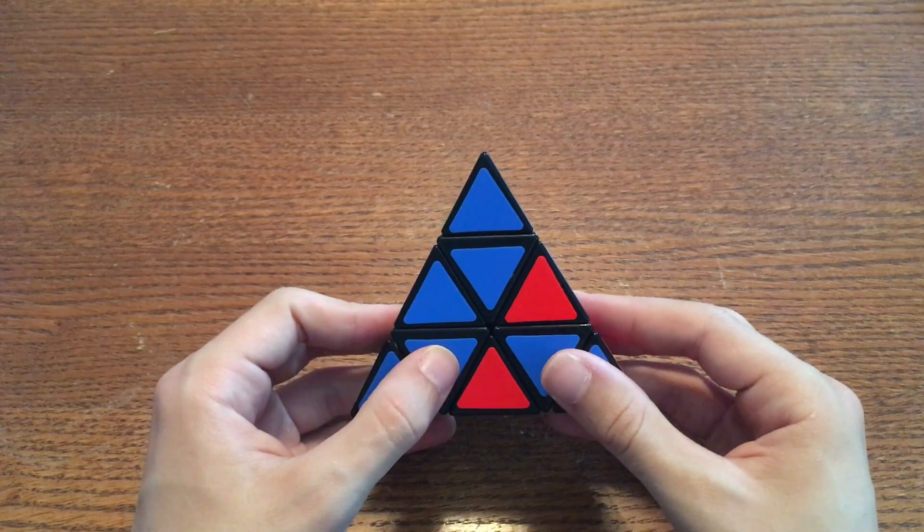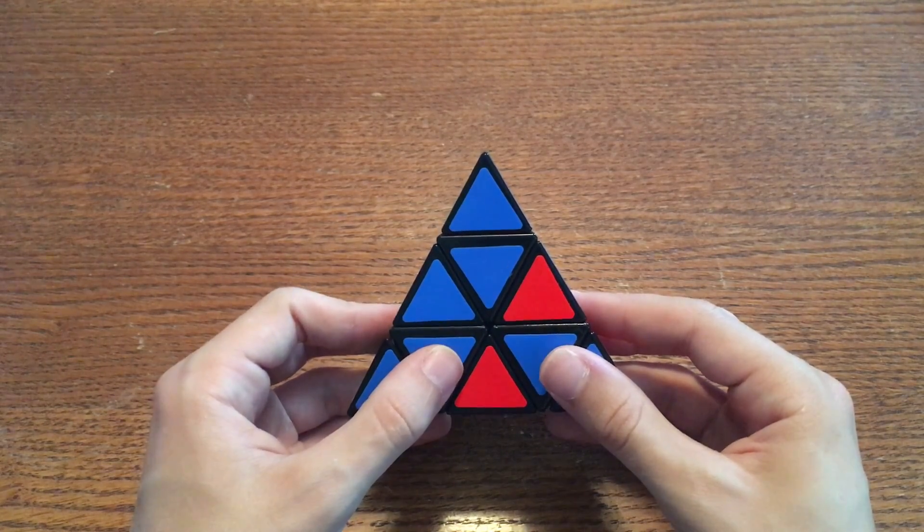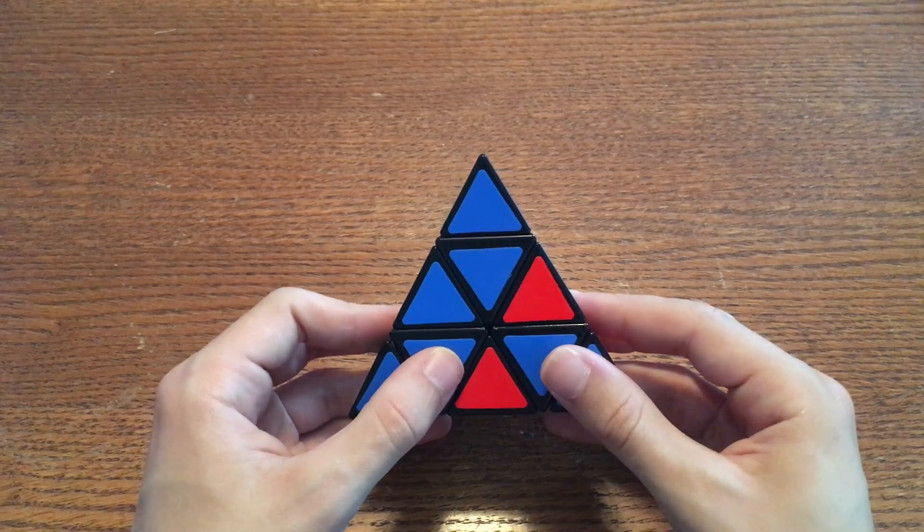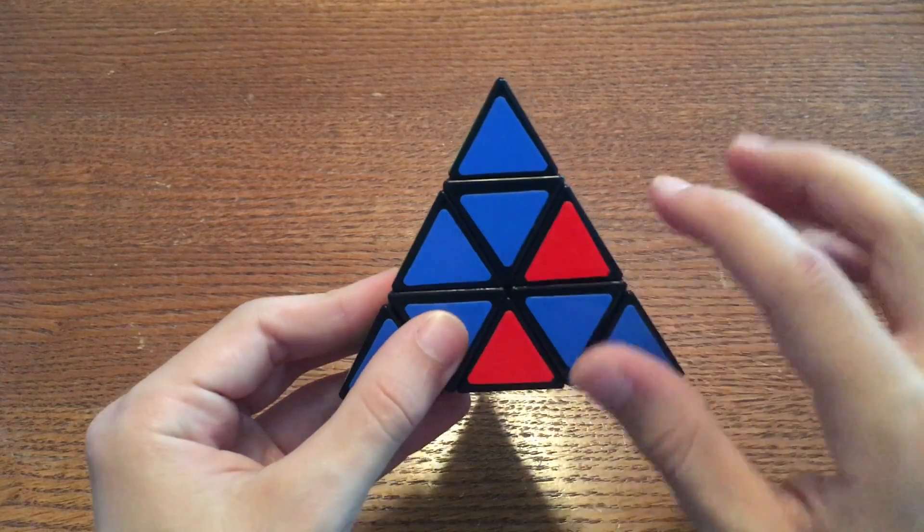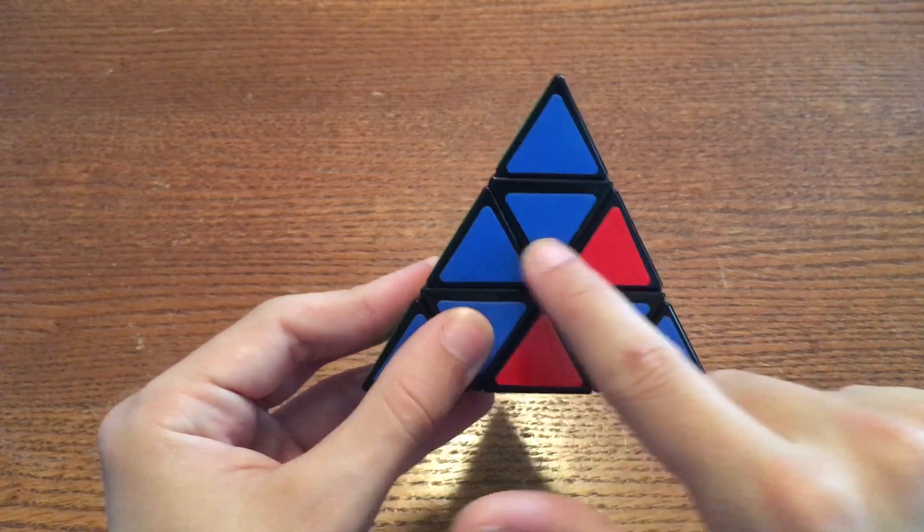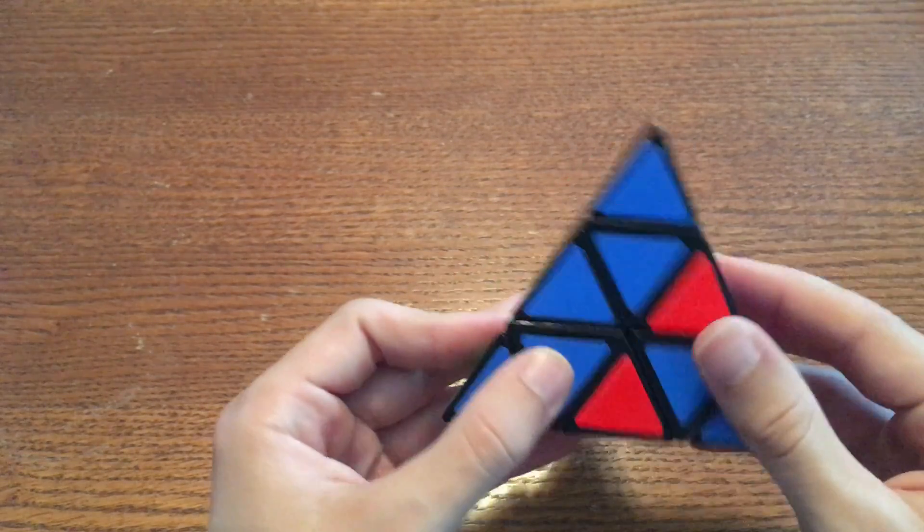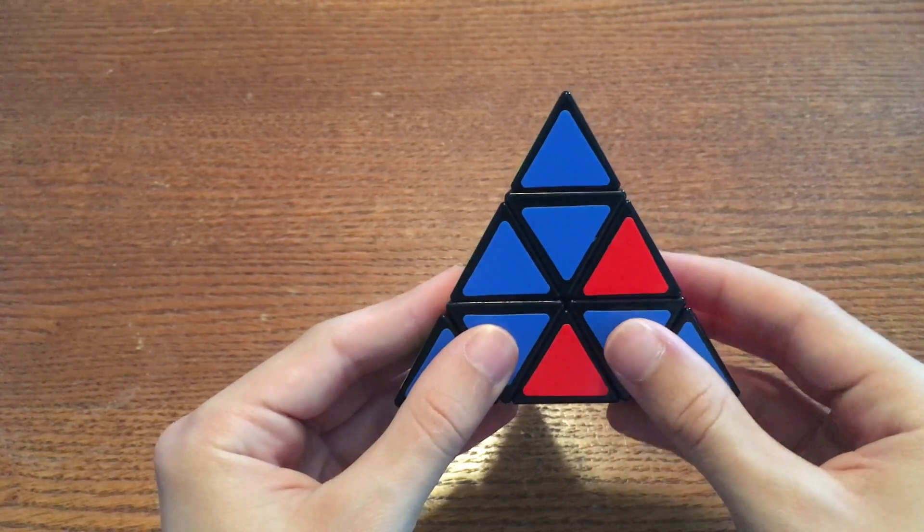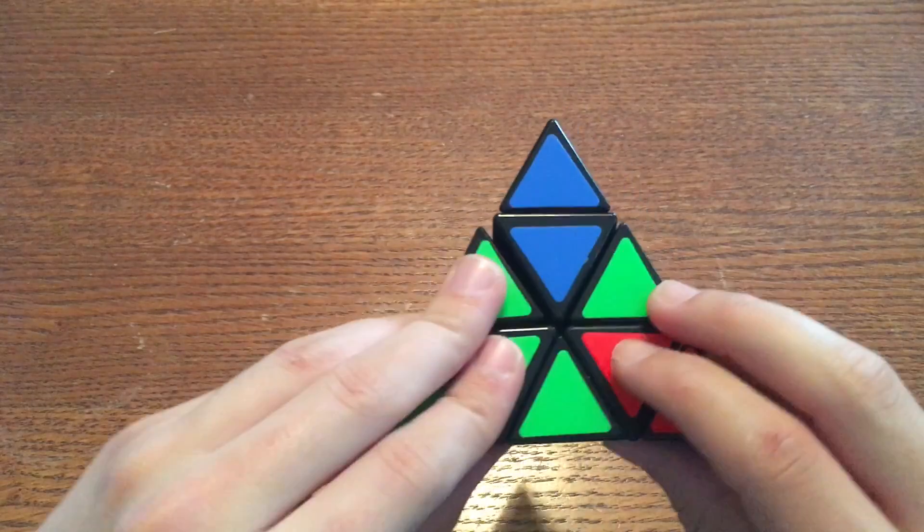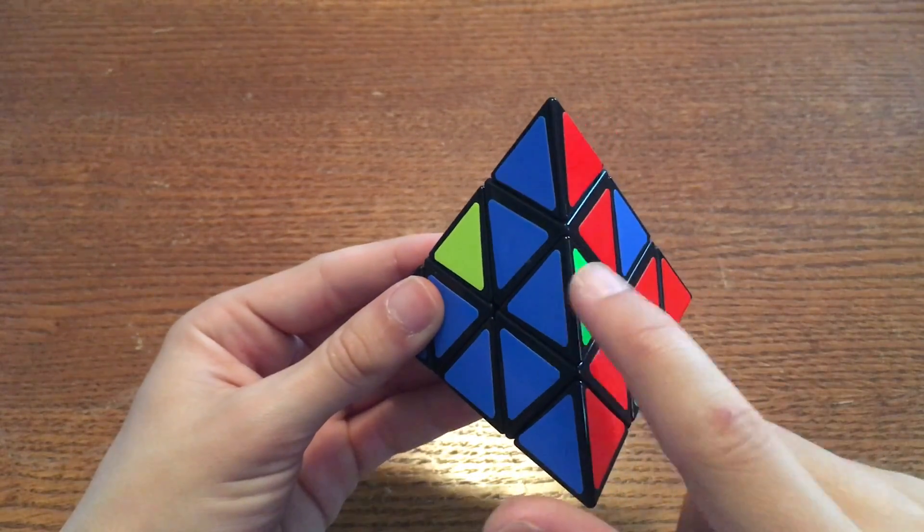The reason I didn't say whether side A is right or left is because you will use it as either depending on the situation. If you do the algorithm with the right side going down first, this edge here will move to the right. As you can see, this is the green blue edge. After I do the algorithm with the right side first, the green blue edge has now moved to the right.